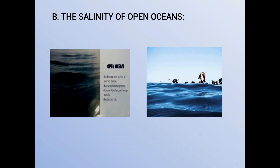The equatorial water is less saline due to the following factors. First, the equatorial oceans receive heavy and well-distributed rainfall. Second, the rate of evaporation over these oceans is less due to the constant cloud cover. Third, large rivers like the Congo and the Amazon pour vast quantities of fresh water into the oceans, and thus the supply of fresh water is very high.